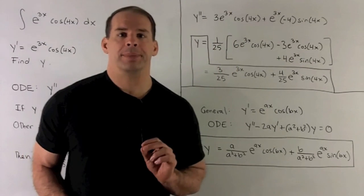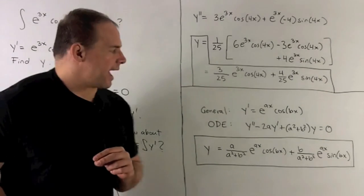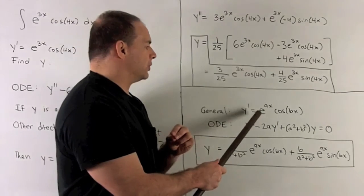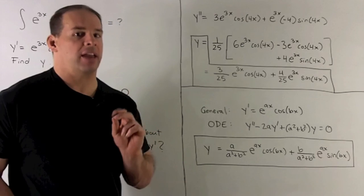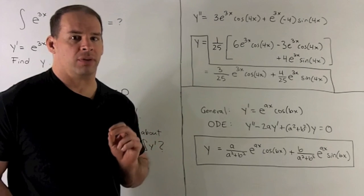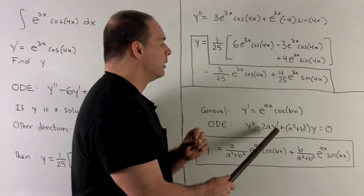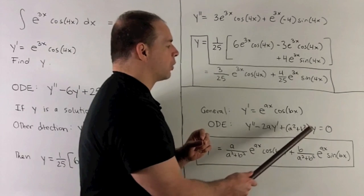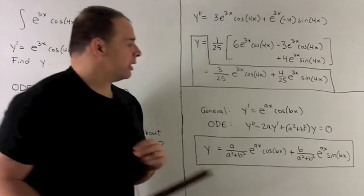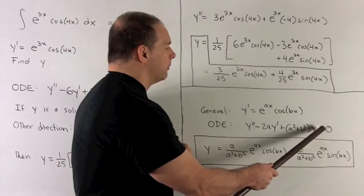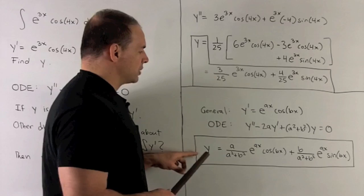Okay, so in general, what's happening here? Suppose I have y prime equal to e to the ax cosine bx. You should check, that's going to solve the ordinary differential equation y double prime minus 2ay prime plus a squared plus b squared y equals 0. Once you've done that, you can solve by isolating for the y. And now you just go through this procedure here. And that's going to give us this formula.